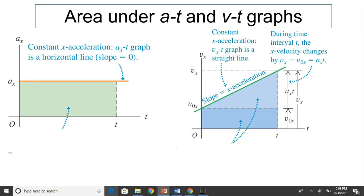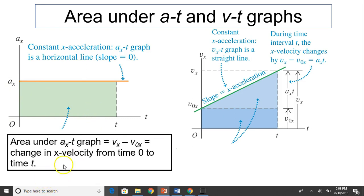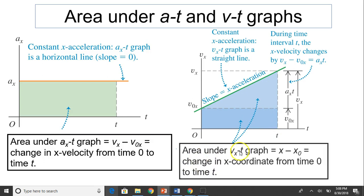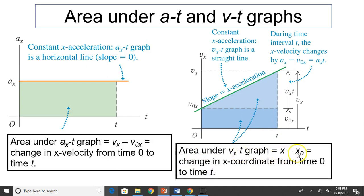Area under at in the vt graph. The area is a times t. What does a times t equal to, according to the equation? A times t is really change in velocity. In vt graph, this area represents displacement. So the area under vt graph is the displacement. Displacement means change in position, the change in x-coordinate from time t0 to time t.